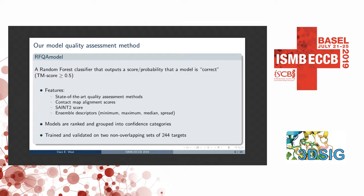After we apply RFQAmodel to all 500 models per target, we rank according to that RFQAmodel score, and based on the score of the best model, we categorize these into different confidence categories. Again, these were trained and validated on two non-overlapping sets of 244 targets in each set.